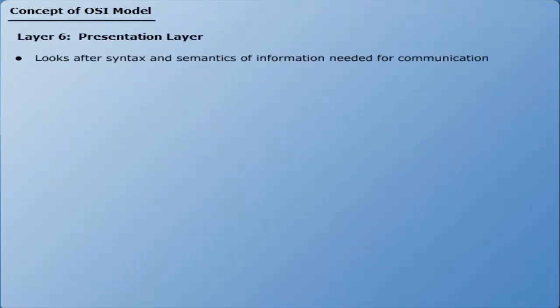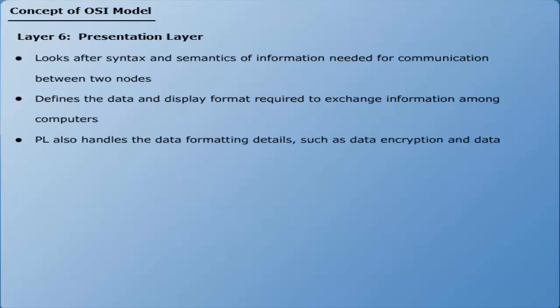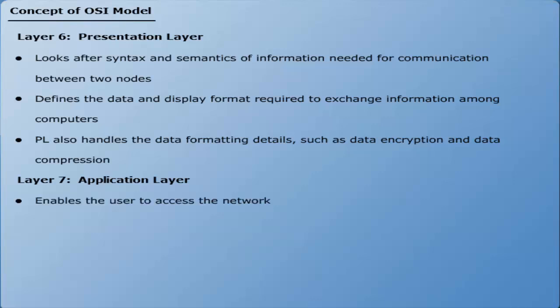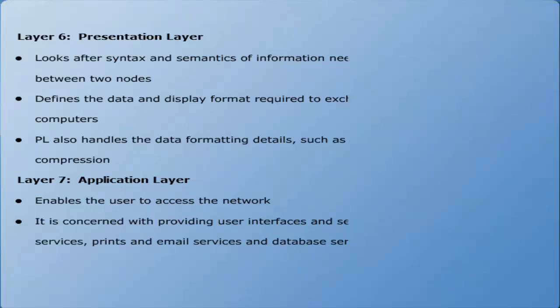Layer 6: Presentation layer — looks after syntax, grammatical rules, and semantics of information needed for communication between two nodes. It defines the data and display format required to exchange information among network computers, and handles data formatting details such as data encryption and data compression. Layer 7: Application layer — enables the user to access the network. It provides user interfaces and services such as file services, print and email services, and database services.